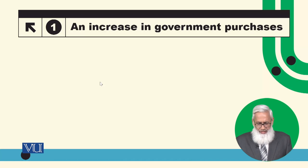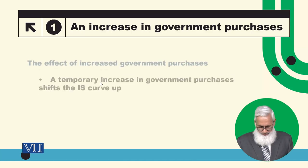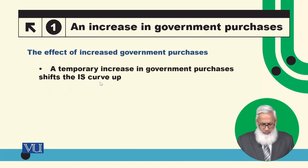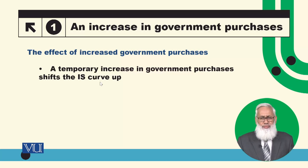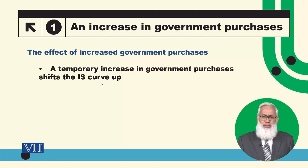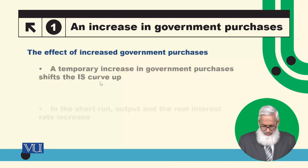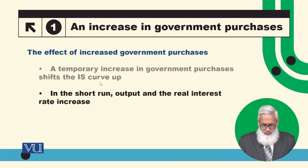We are taking an increase in government purchases. A temporary increase in government purchases will shift the IS curve up. The IS curve represents equilibrium in the goods market, so if changes increase aggregate demand, it will shift the IS curve up. In the short run, output and the real interest rate increase.